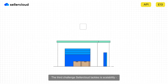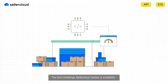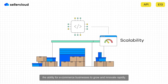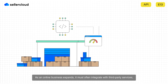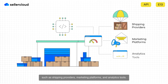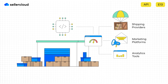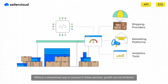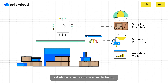The third challenge SellerCloud tackles is scalability — the ability for e-commerce businesses to grow and innovate rapidly. As an online business expands, it must often integrate with third-party services such as shipping providers, marketing platforms, and analytics tools. Without a streamlined way to connect to these services, growth can be hindered and adapting to new trends becomes challenging.